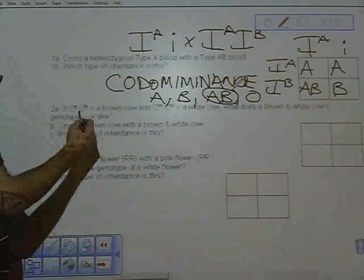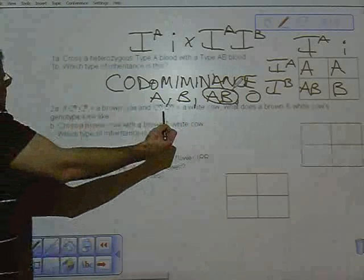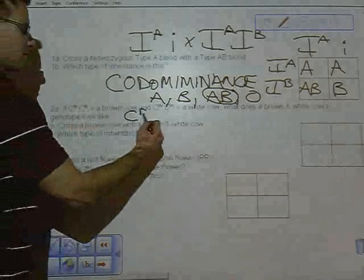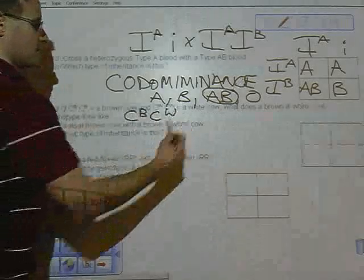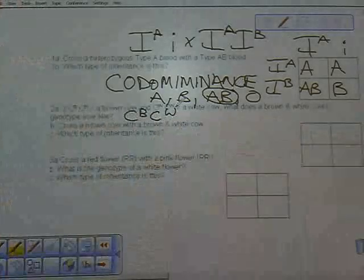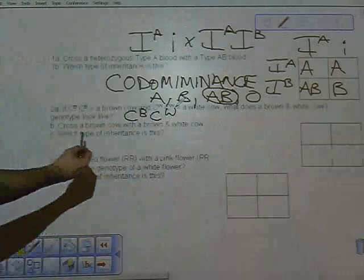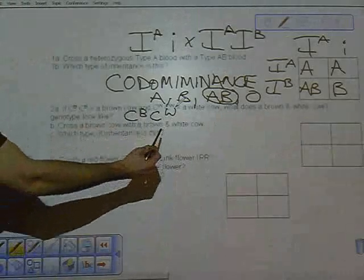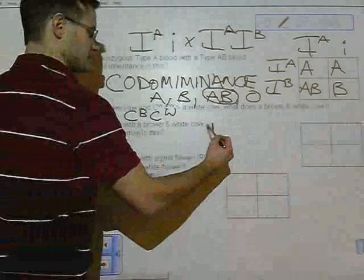Number two says a brown cow and a white cow are combined. What does a brown and white cow's genotype look like? Brown is C^B C^B and white is C^W C^W. Brown and white would be one C^B and one C^W.